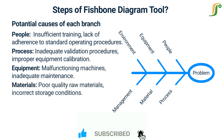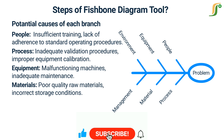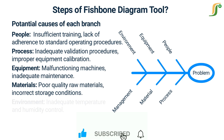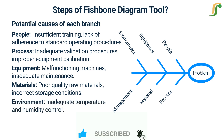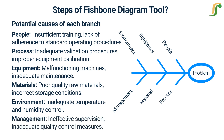The materials branch may have potential causes such as poor quality raw materials and incorrect storage conditions. The environment branch may include inadequate temperature and humidity control. The management branch may include ineffective supervision and inadequate quality control measures.